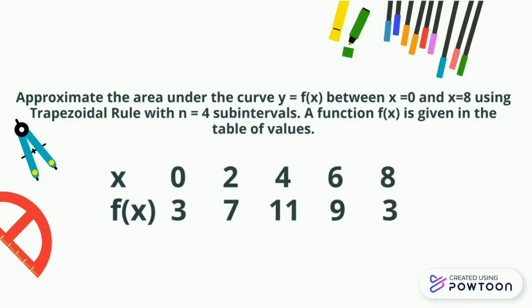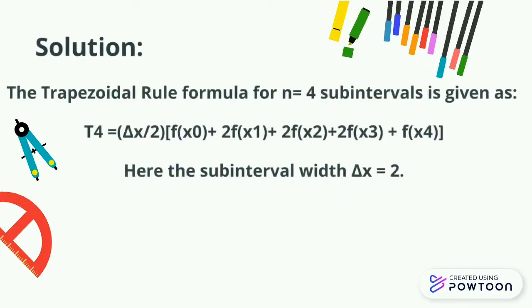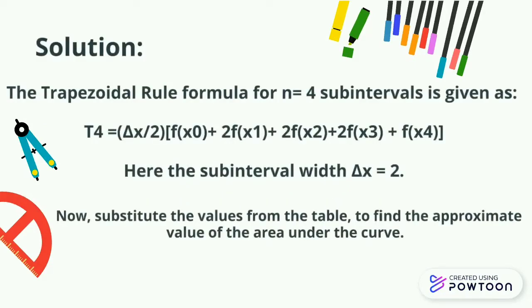The trapezoidal rule formula for n equals 4 subintervals is given as T4 equals delta x over 2 times [f(x0) plus 2f(x1) plus 2f(x2) plus 2f(x3) plus f(x4)]. Here the subinterval width delta x equals 2.